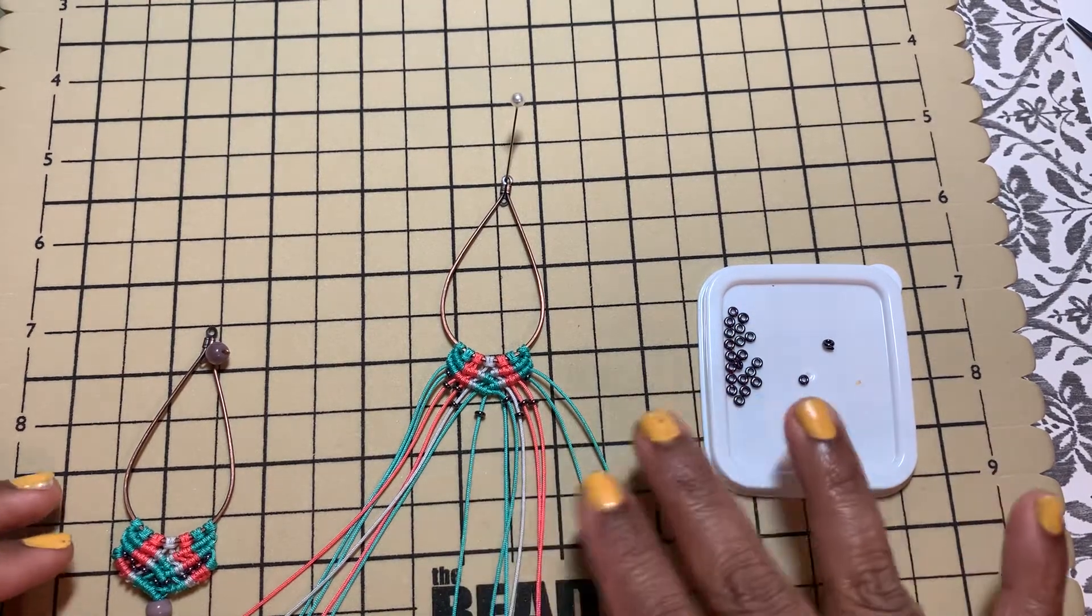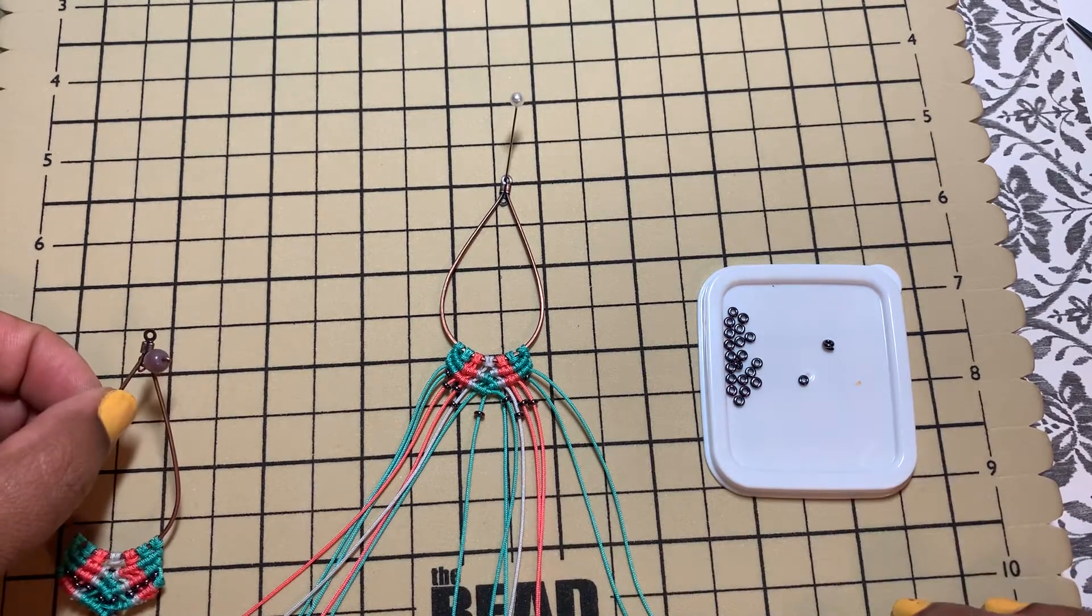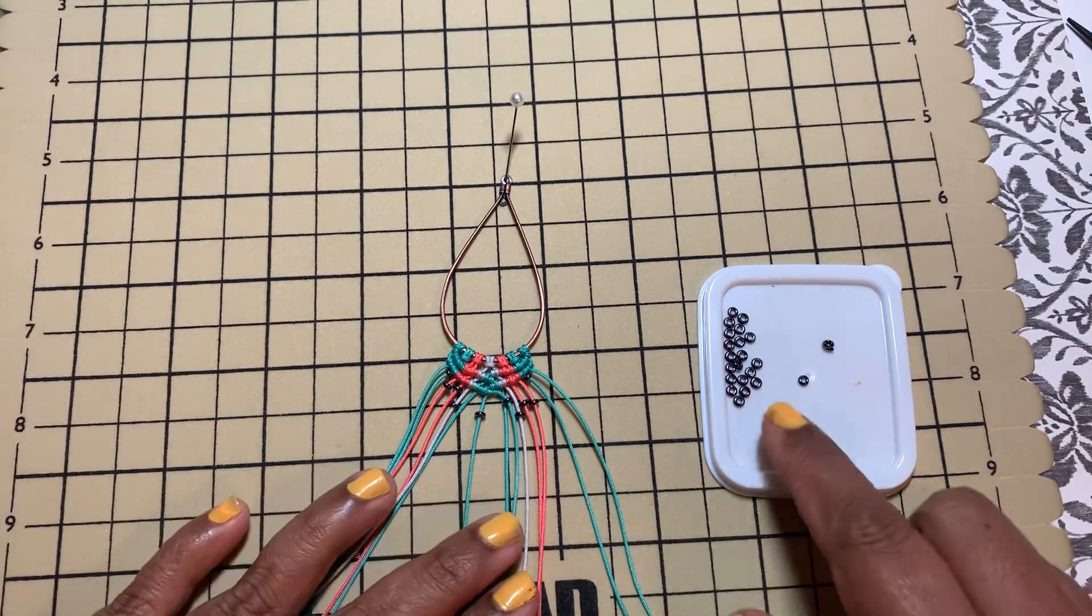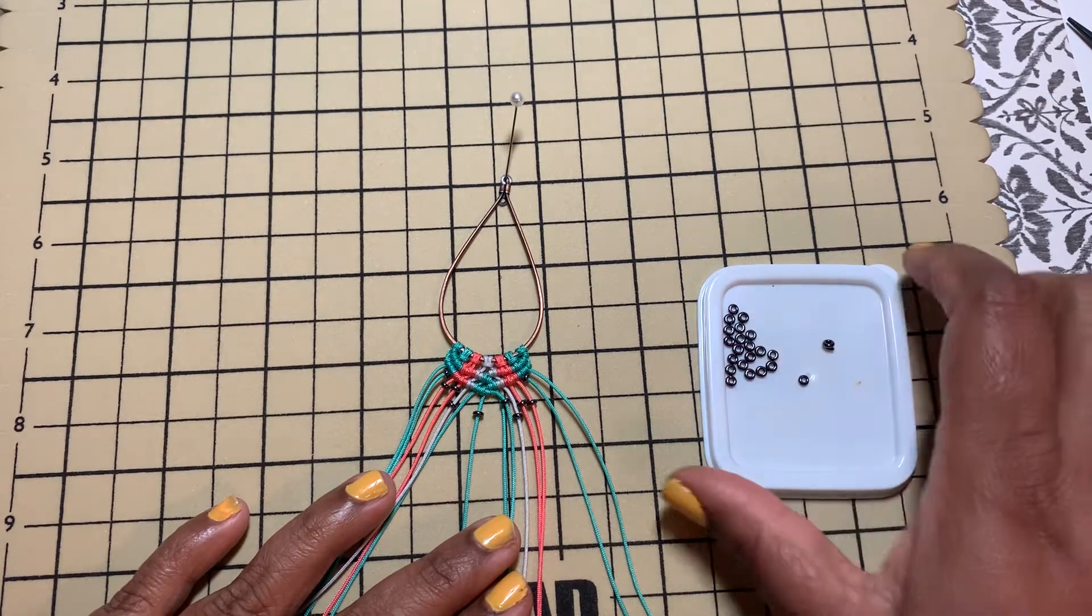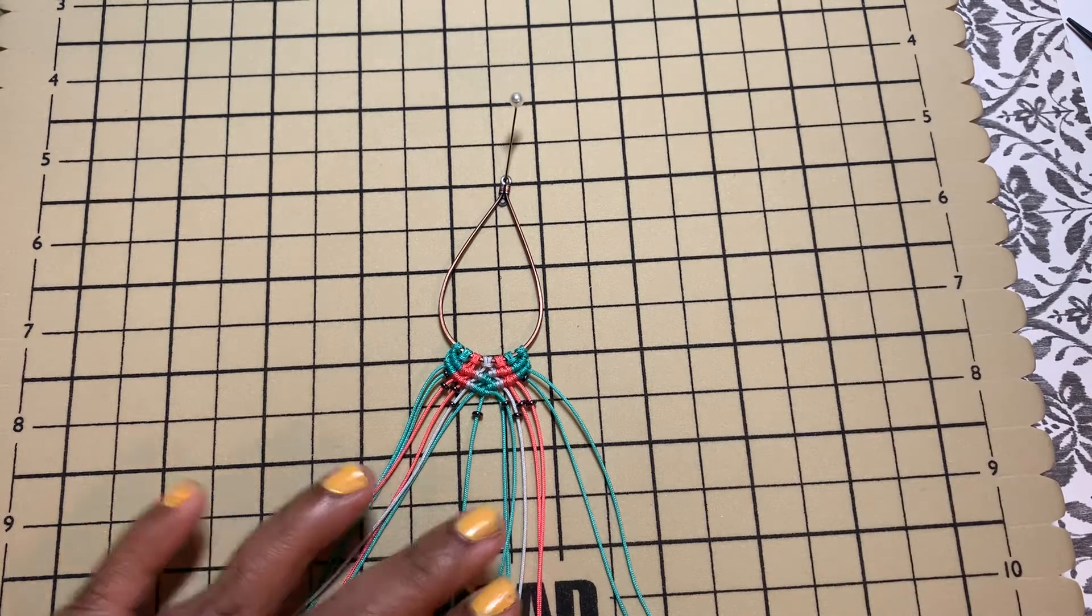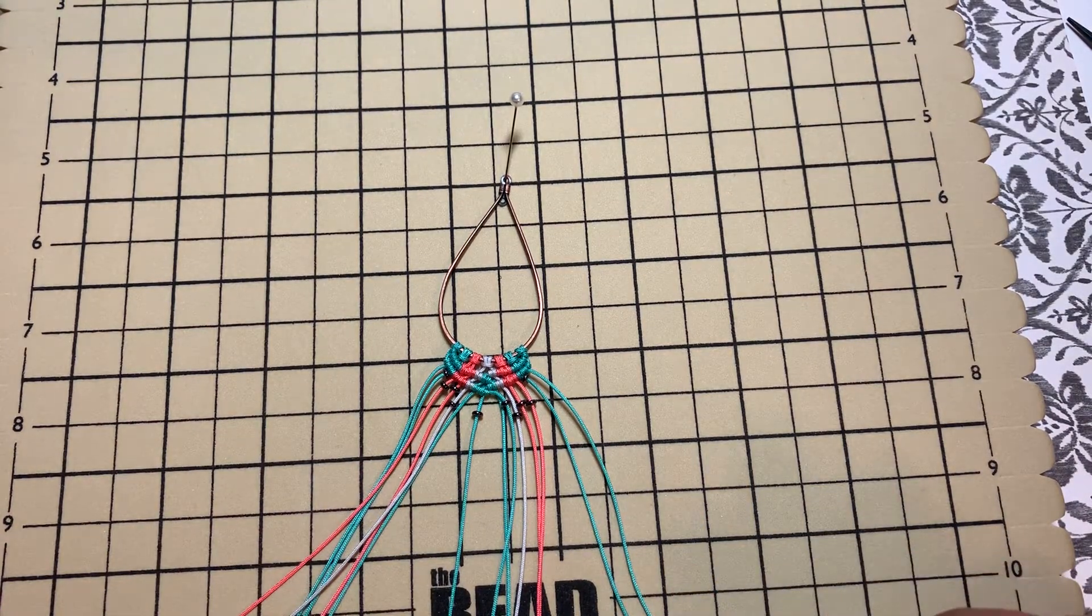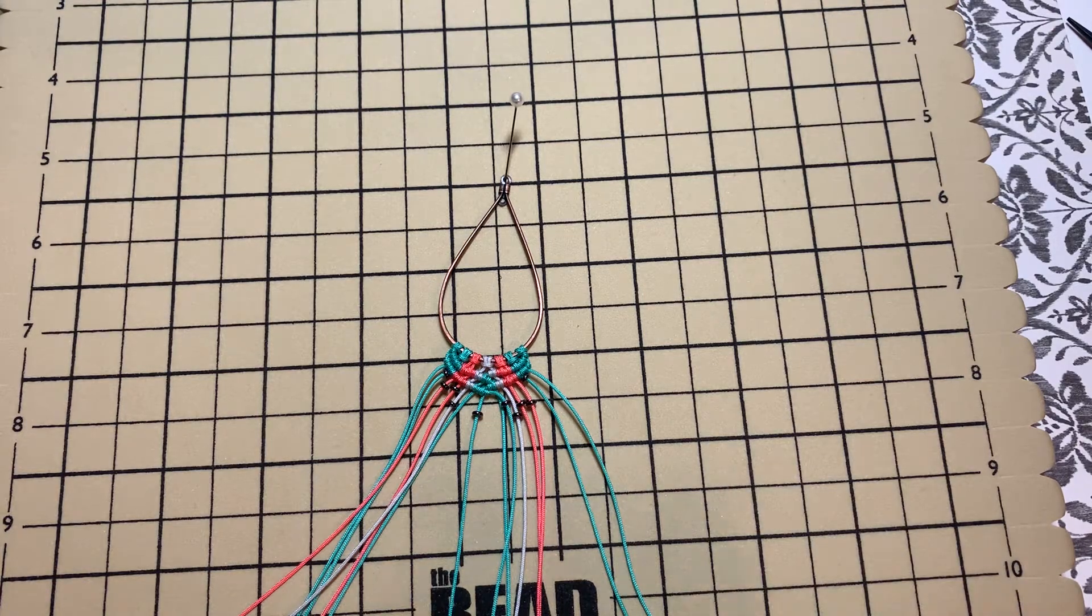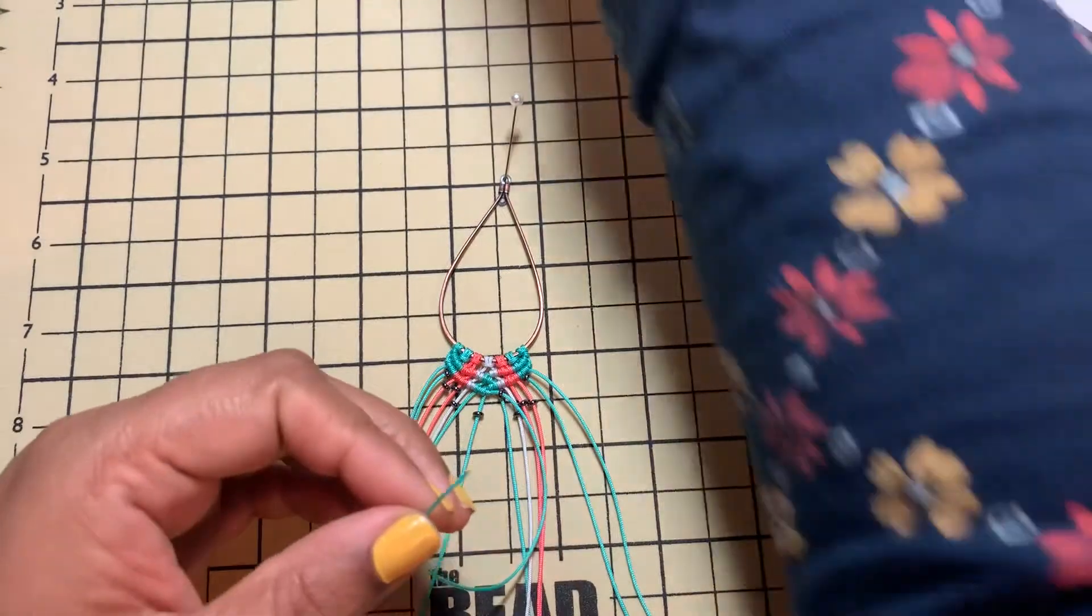I went ahead and did the second row and then threaded in all the beads, the O-beads here with a bigger hole. The only problem you'll face is sometimes the bead will not go through the cord.